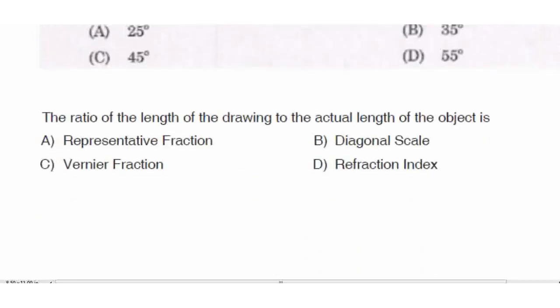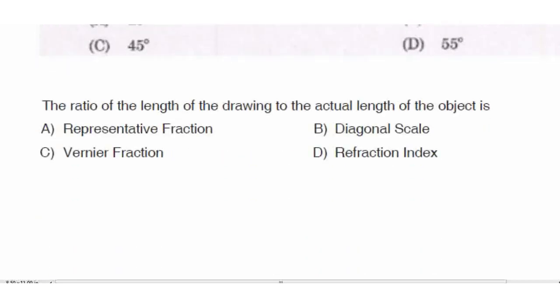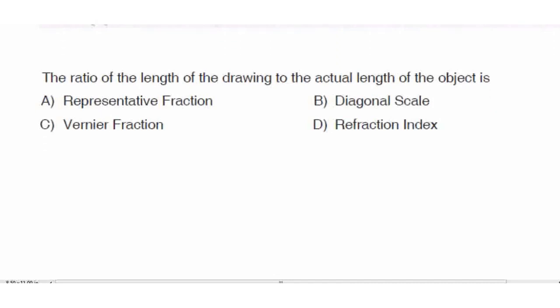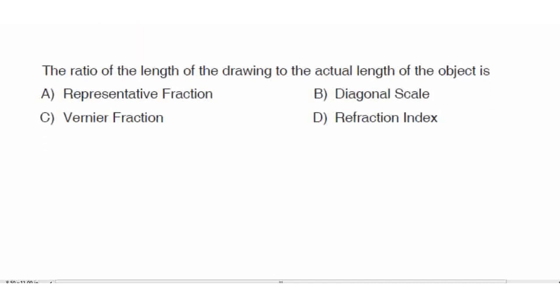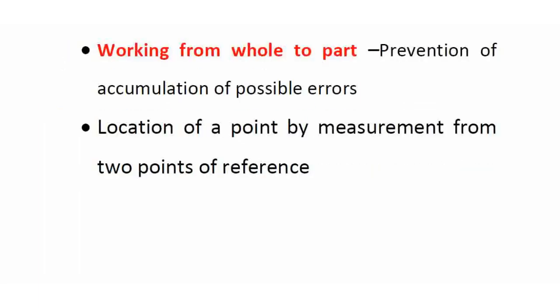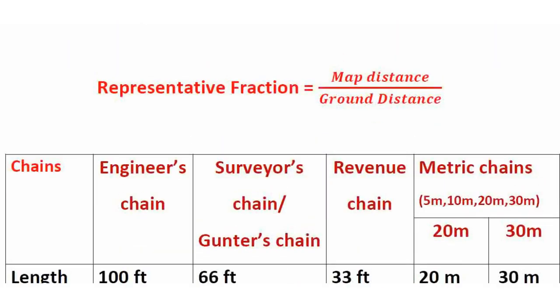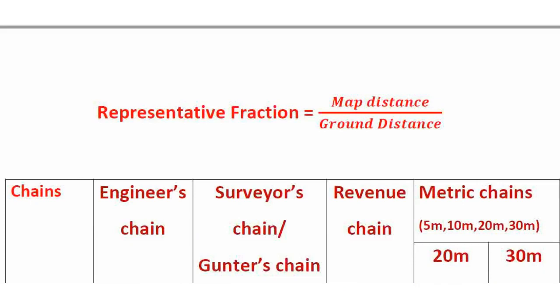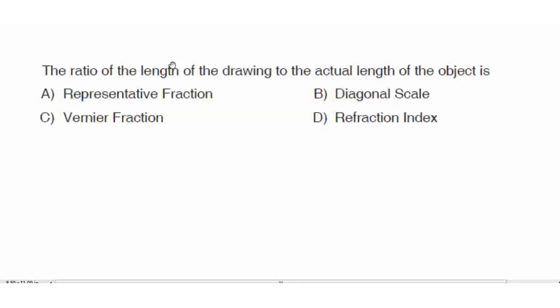Next question: the ratio of the length of the drawing to the actual length of the object — drawing length divided by actual length — is called the representative fraction. Right answer Option A. Representative fraction equals map distance divided by ground distance.